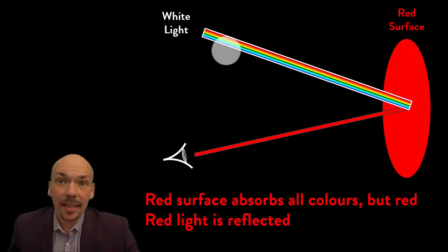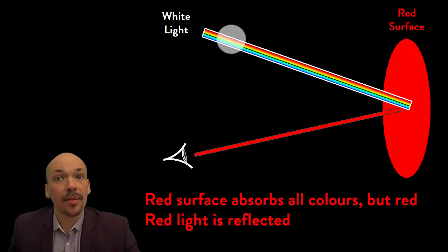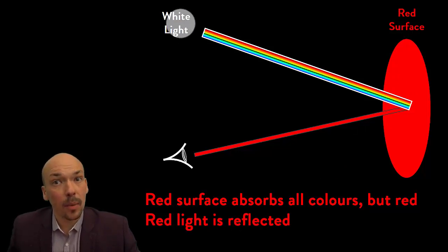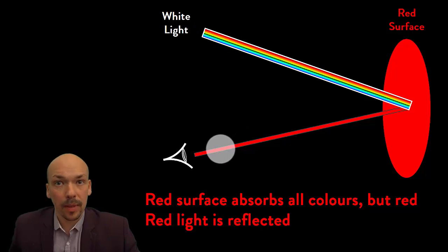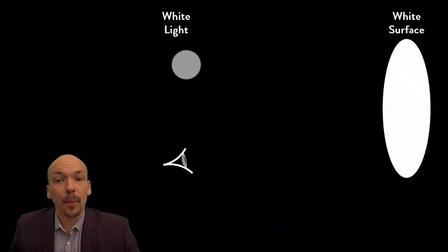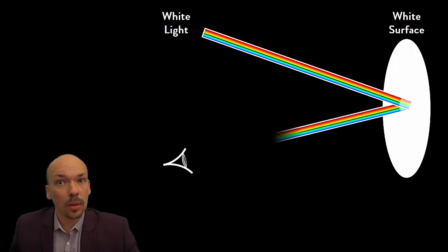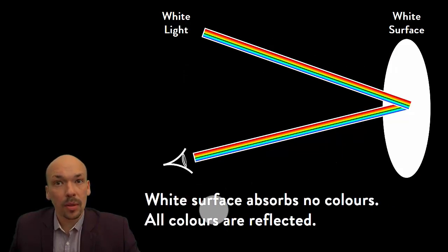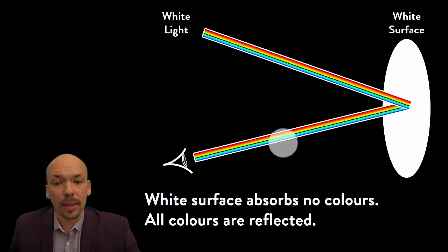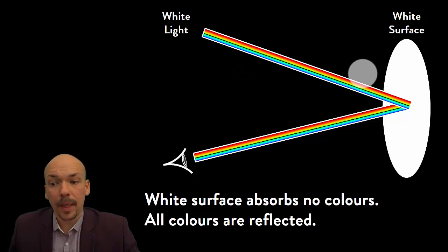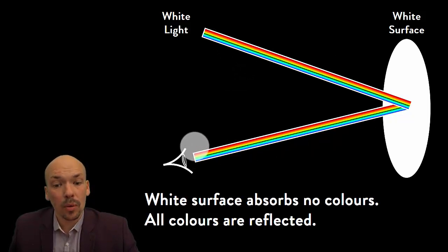It's very important that the surface gets the red light. If it doesn't get red light inside the white light, then it will not be able to reflect it and we won't see it. On a white surface, when white light is shown upon it, you will see that all colors are reflected, because a white surface absorbs no colors — all colors are reflected.